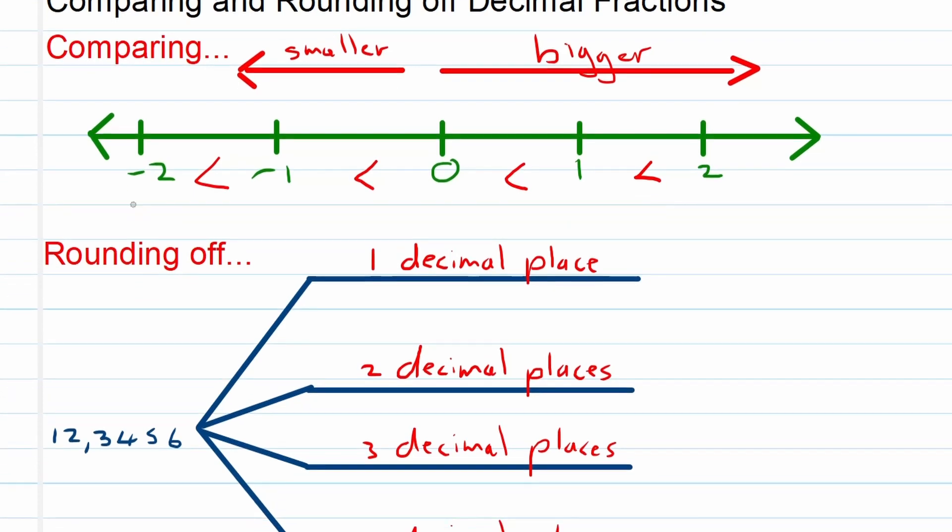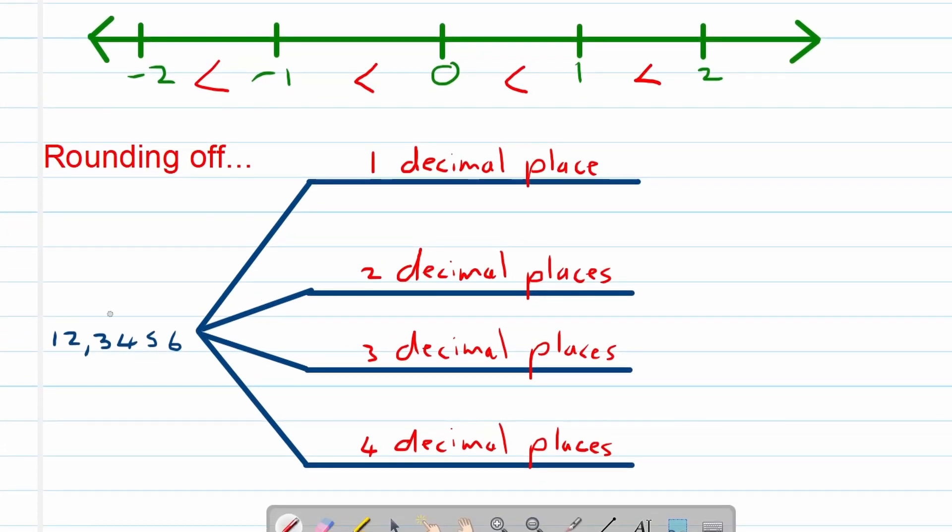Now rounding off. So we are going to take the same number from the previous video, 12.3456, and rounding off to one decimal place. Remember, that's one decimal place, so we'll only have one number after the comma. Two decimal places is all the way to there. Three decimal places is the five, and four decimal places to where the six is. So take note of that.